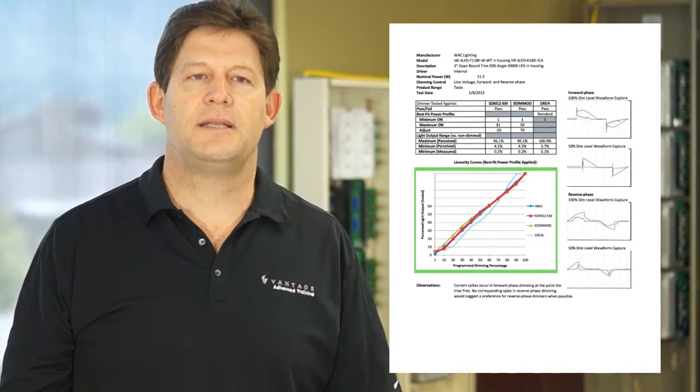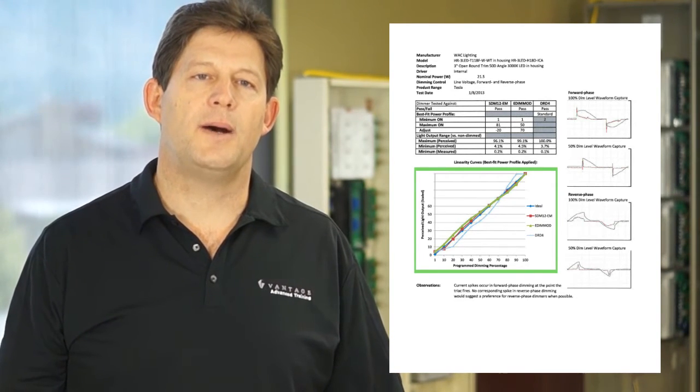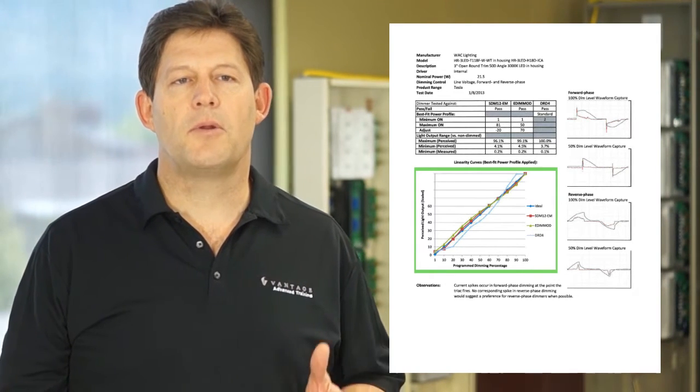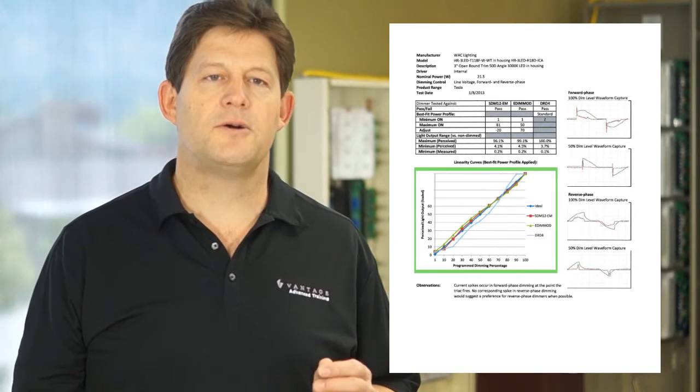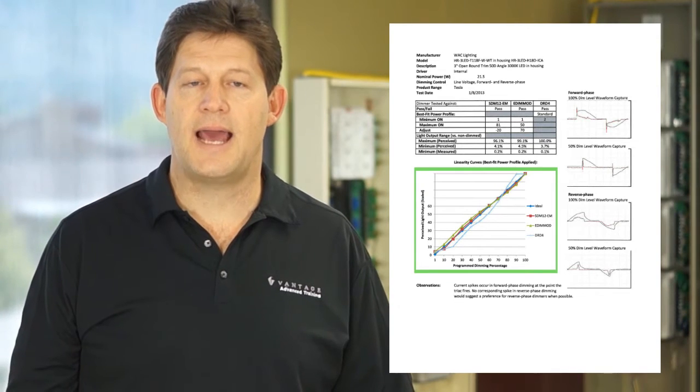The red line represents the standard dimmer module, the green line the electronic dimmer module, and the light blue the DRD4. You can see in this particular report that both native vantage dimmer curves follow the ideal very, very closely. Your eye would likely not be able to detect that these don't follow the ideal exactly.